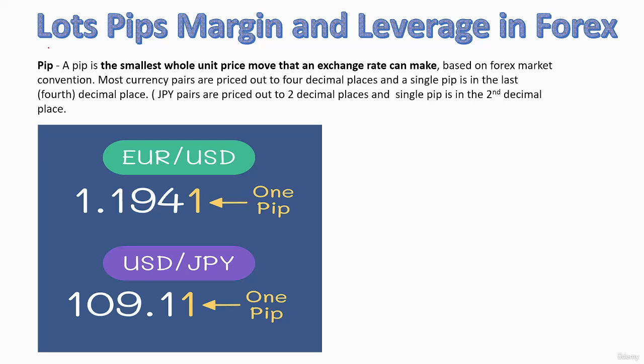Now let us talk about essential terminology in Forex. First, let us talk about PIP. Usually, PIP is the fourth decimal place of a currency pair.